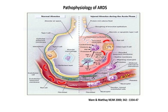Coming to the pathophysiology of ARDS: ARDS is an acute inflammatory lung condition, not a disease. Therefore it is always preceded by an underlying process, which may be pulmonary or extra-pulmonary lung injury — such as acute pancreatitis, sepsis, or other causes. This pathophysiology progresses through three phases: the acute inflammatory phase, the proliferative phase, and the fibrotic phase.